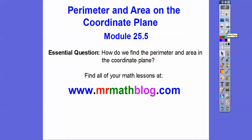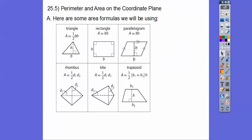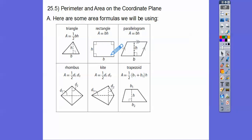We're going to be using lots of distance formula and these formulas. So the areas of figures — for a triangle, these are all familiar, it's one-half base times height. For a rectangle, it's base times height. For a parallelogram, same thing, base times height, as long as you know the perpendicular segment, which is the height.